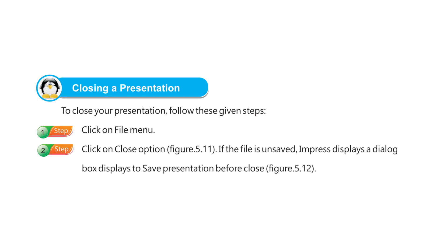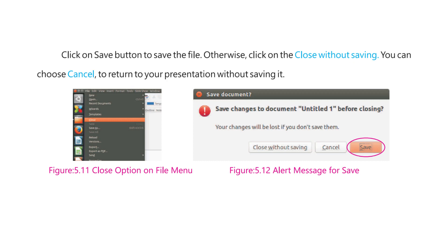Closing a Presentation. To close your presentation, follow these given steps. Step 1: Click on File menu. Step 2: Click on Close option. If the file is unsaved, Impress displays a dialog box asking to save the presentation before closing. Click on the Save button to save the file. Otherwise, click on Close without saving. You can choose Cancel to return to your presentation without saving it.